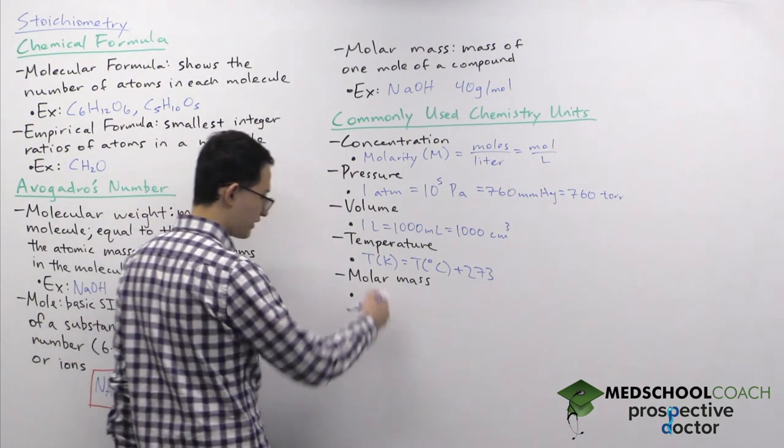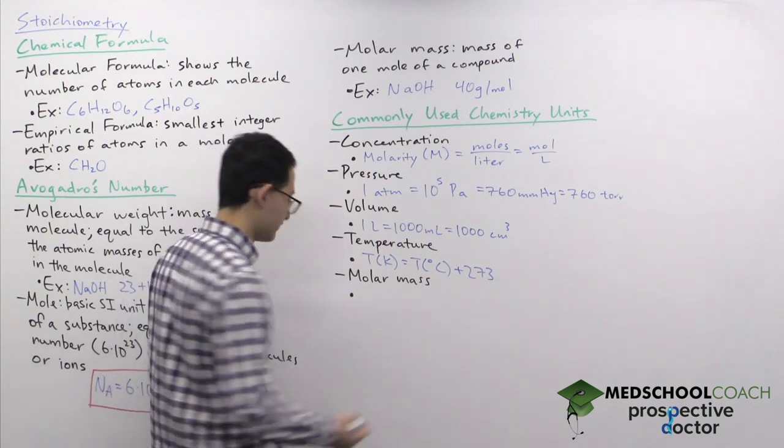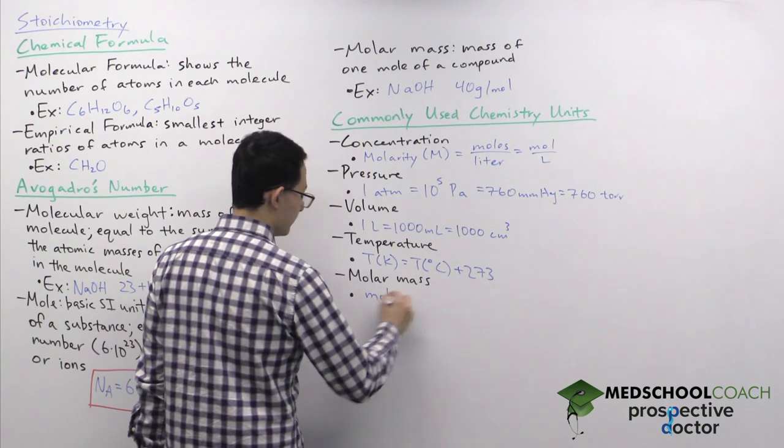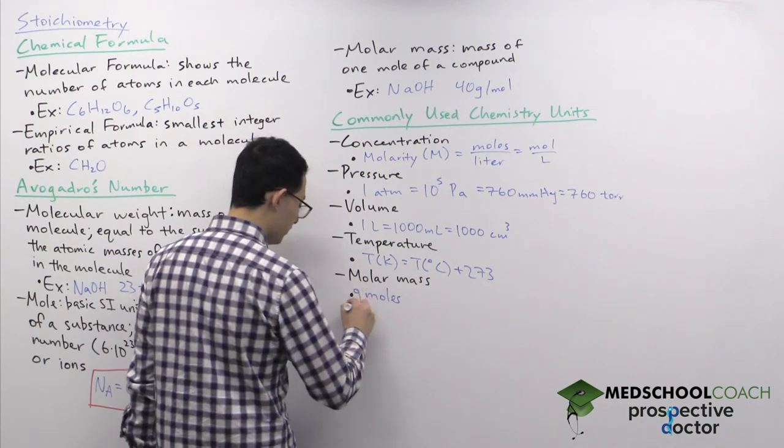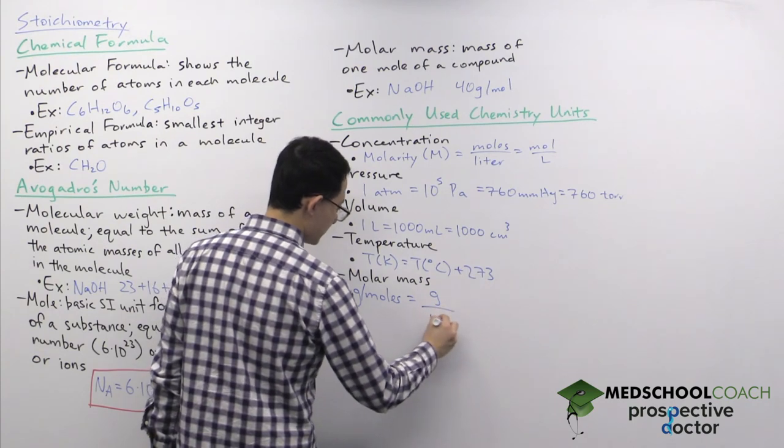And then molar mass, we've already seen, this is essentially the unit for the weight of one mole of a substance. This has units of grams per mole.